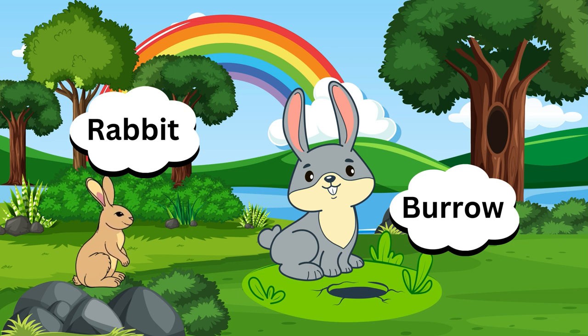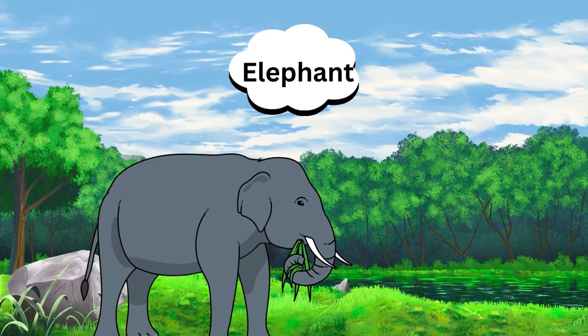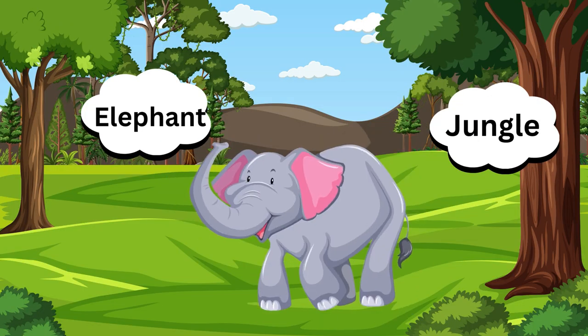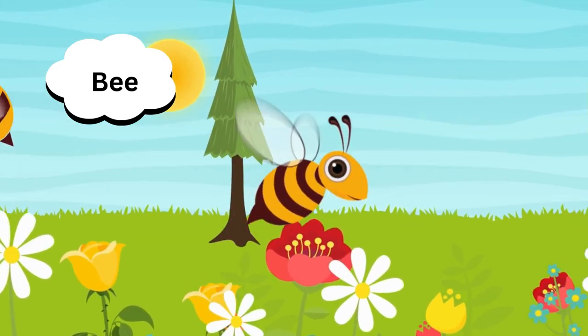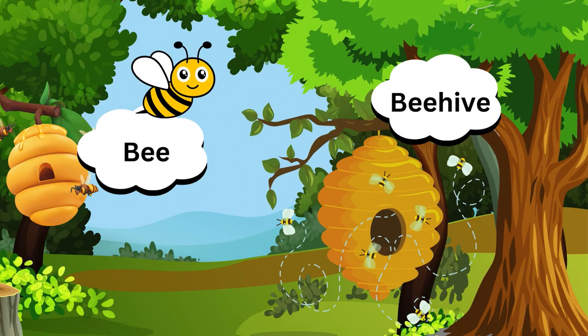Rabbit — burrow. Bear. A bear lives in a cave. Bear — cave. Elephant. An elephant lives in a jungle. An elephant lives in a jungle. Elephant — jungle. Bee. Bee lives in a beehive. Bee lives in a beehive. Bee — beehive.